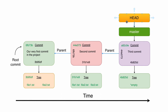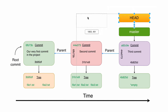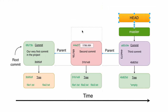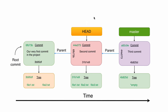It changes the contents of the HEAD file located in the root of the .git folder. Let's now try to move the HEAD pointer to the second commit. For that we will use git checkout and pass the SHA1 hash of this second commit as an argument.